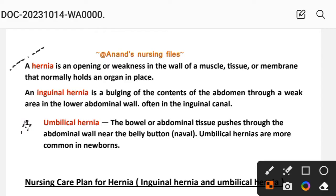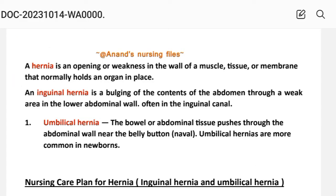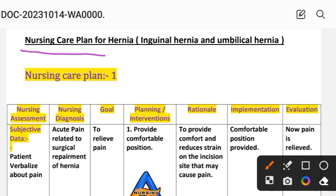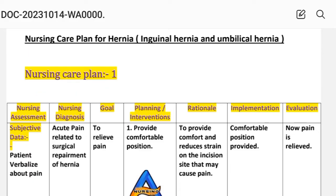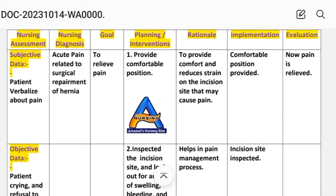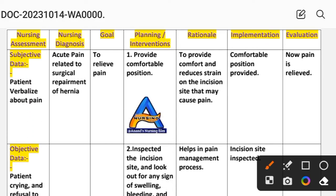Nursing care plan for hernia — inguinal hernia and umbilical hernia. Nursing care plan number one. Nursing assessment: subjective data — patient verbalizes about pain.